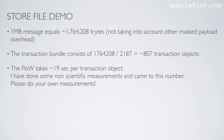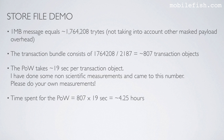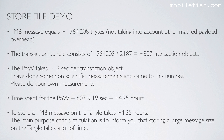The proof of work takes approximately 19 seconds per transaction object — I have done some non-scientific measurements and came to this number, so please do your own measurements. The total time for proof of work is 807 times 19 seconds, approximately 4.25 hours. To store a 1 MB message on the Tangle takes approximately 4.25 hours. The main purpose of this calculation is to inform you that storing a large message on the Tangle takes a lot of time.